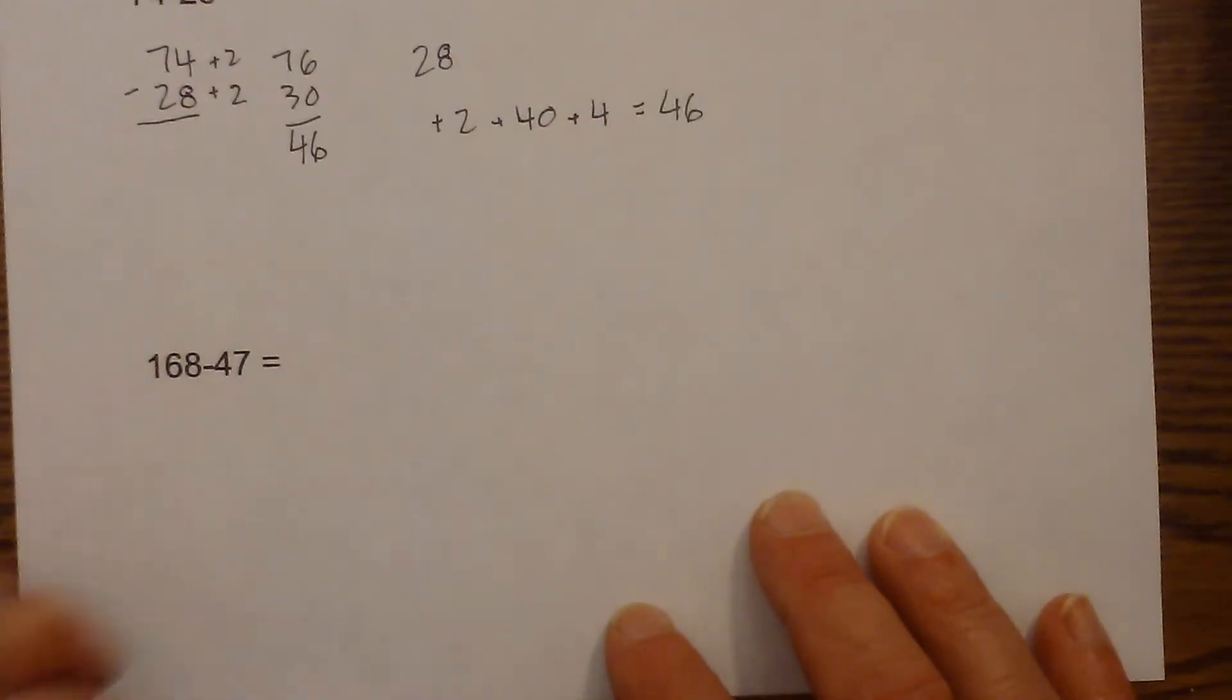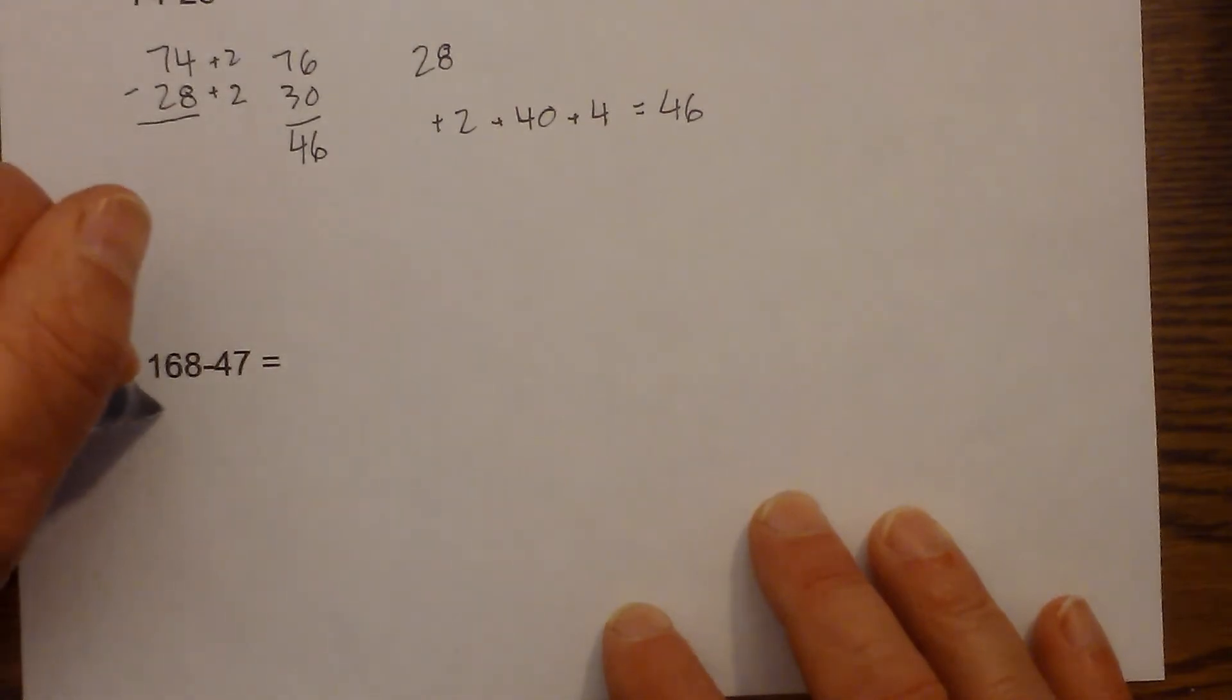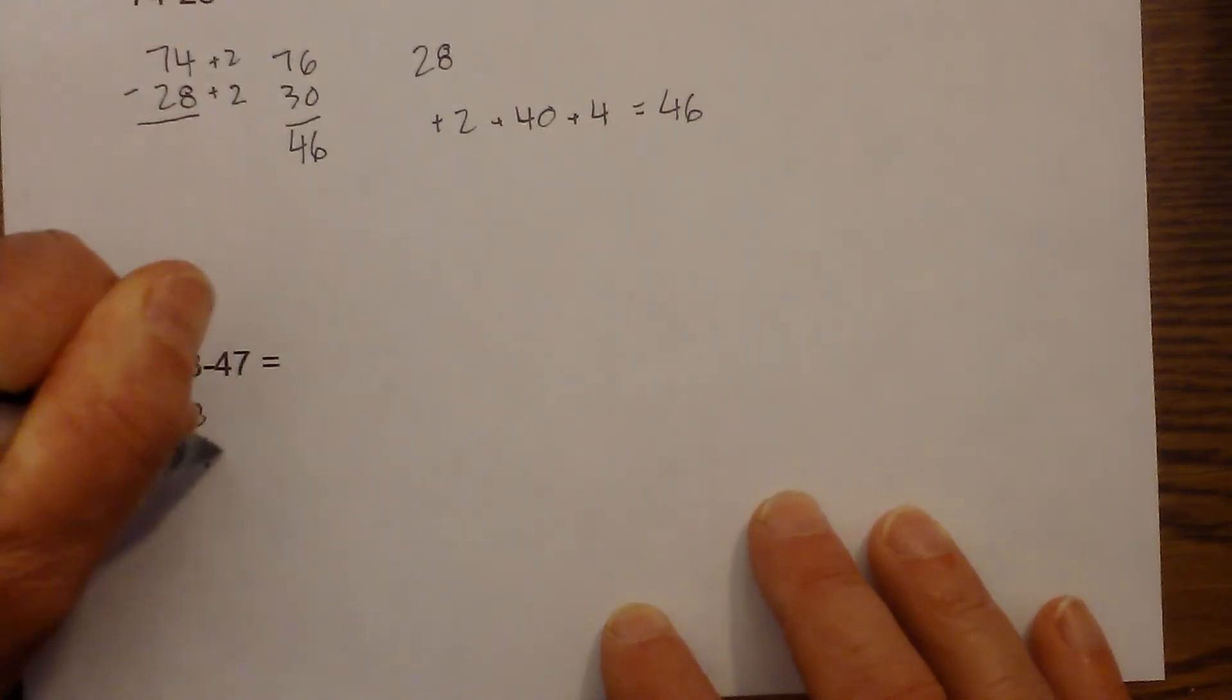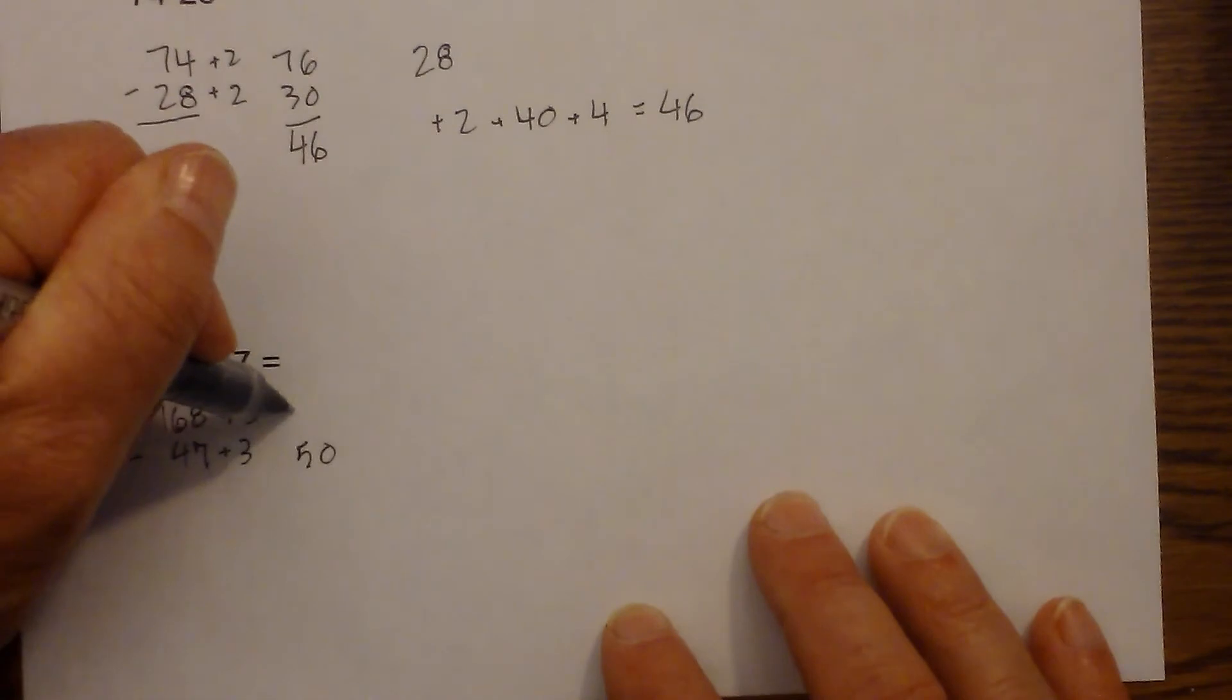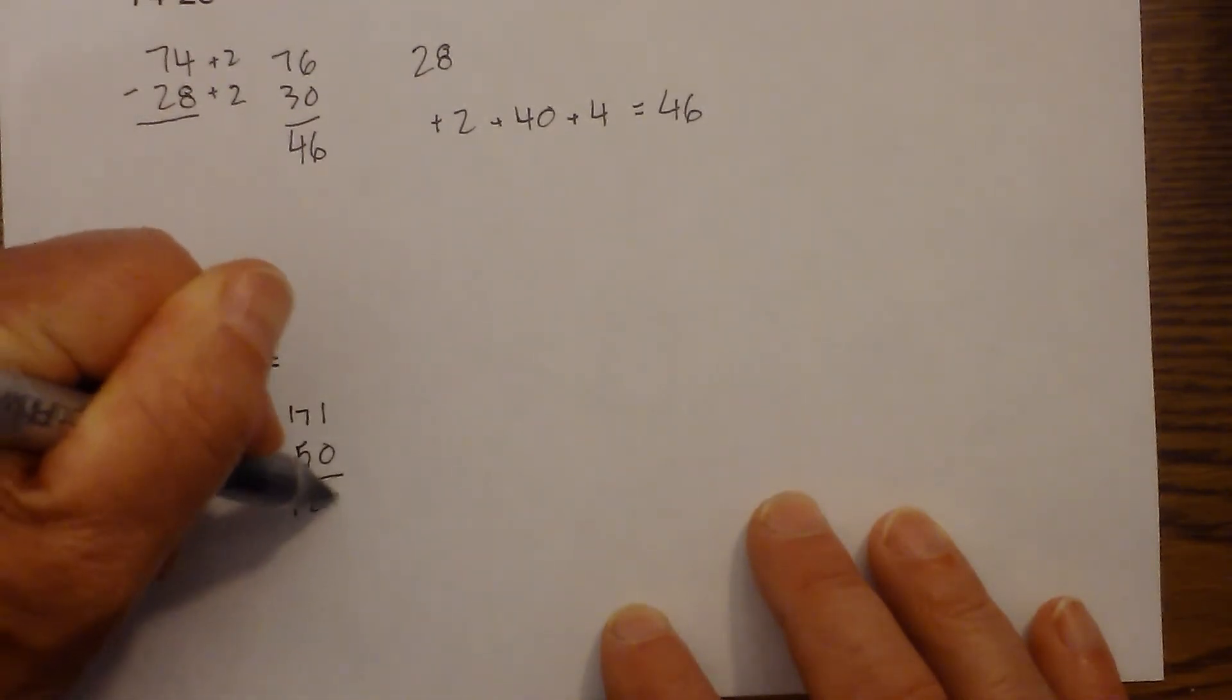And it will even work for a little bit larger problem. So let's work this last one. Let me get my camera in focus. So we have 168 minus 47. I am going to add 3 to both. So now I have 50 and that is 171. I subtract those in my head and that becomes 121.